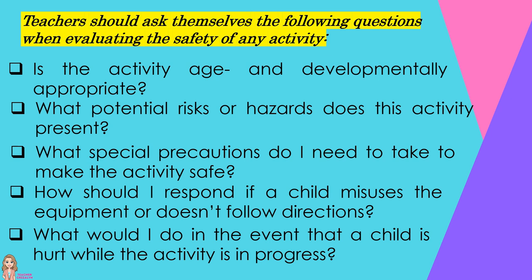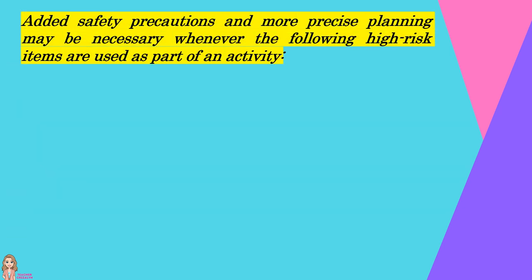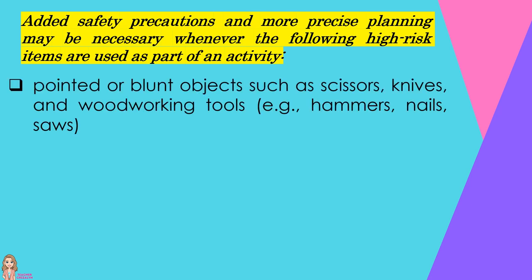Basic risk management principles include advanced planning, formulating safety guidelines, determining appropriate supervision, and providing safety education. Added safety precautions and more precise planning may be necessary whenever high-risk items are used as part of an activity, such as pointed or blunt objects like scissors, knives, and woodworking tools — for example, hammers, nails, and saws.